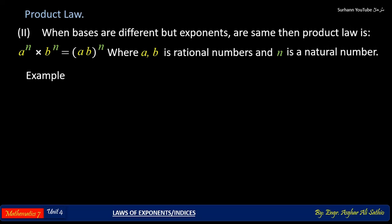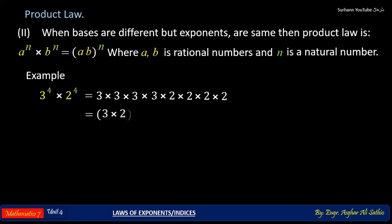To understand this more clearly, let us look at the following example: 3 to the power 4 multiplied with 2 to the power 4. We know that 3 to the power 4 means 3 is multiplied 4 times, and it is multiplied with 2. And 2 to the power 4 means 2 is multiplied 4 times.